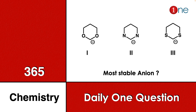Welcome to One Chemistry. This is the 365 Chemistry Series — daily one question for you. Here, three different types of anions are given in cyclohexane with two heteroatoms: the first one is with oxygen, the second one is with nitrogen, and the third one is with sulfur. You have to find the most stable anion among the three.